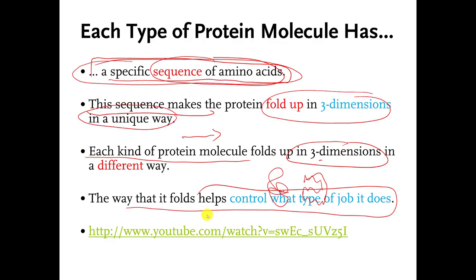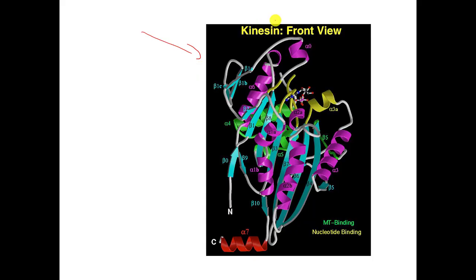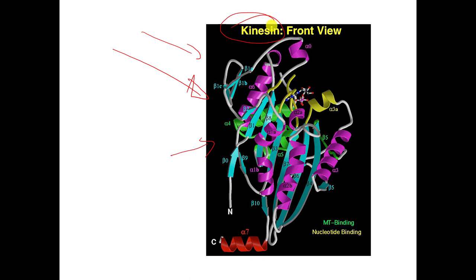So every protein molecule folds up in its own special way in 3D. This is the 3D shape of one specific protein molecule called kinesin. Kinesin is a molecule in all of our cells whose job is to carry other molecules around to different parts of the cell. You can see that chemists and biologists probably spent years trying to figure out the 3D shape of this specific molecule — it is not an easy thing to do. A lot of times people feel like if they can figure out the shape of a molecule, it can help them understand what job it does and how it does its job.